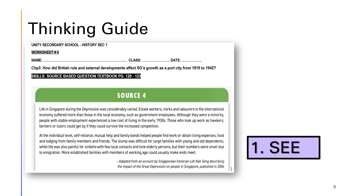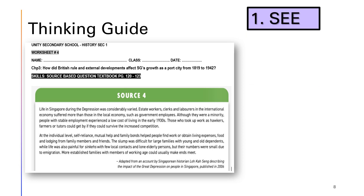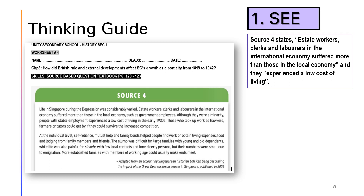When we say we use the 'See', seeing means what you have looked at or observed from the source — you look at the source details specifically. So when you read this particular source on the Great Depression, you can see paragraph one and paragraph two. What is it from the source that you can discover about the Great Depression? One of the things that you see from paragraph one is that estate workers, clerks, and laborers are actually more affected than those in the local economy, and they experience a low cost of living.